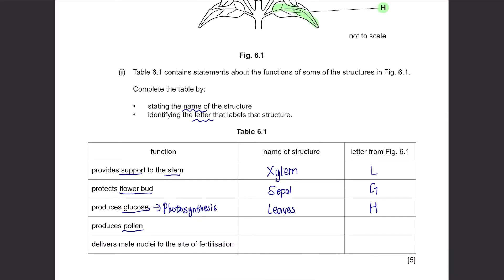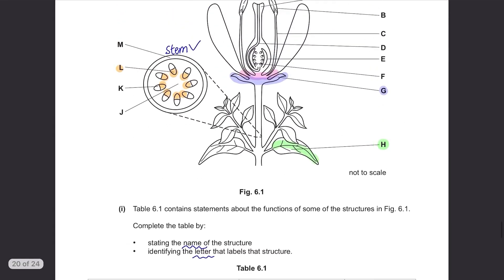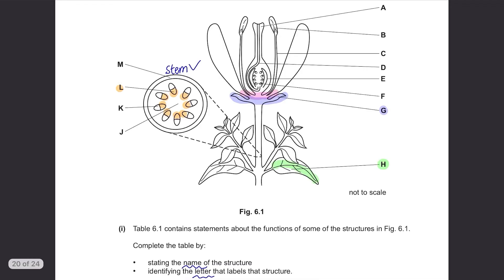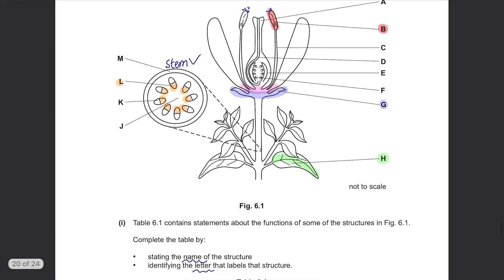Produces pollen. Think about where you can spot pollen from a flower. They are at anthers where they are produced so the answer is B, anther.